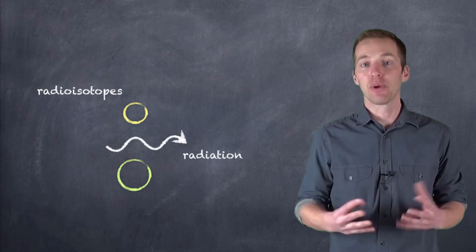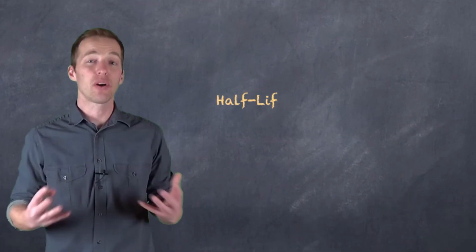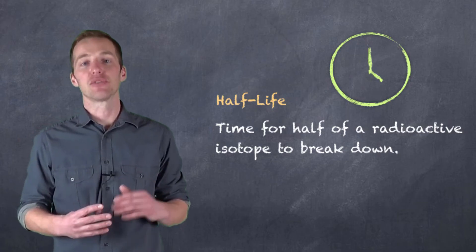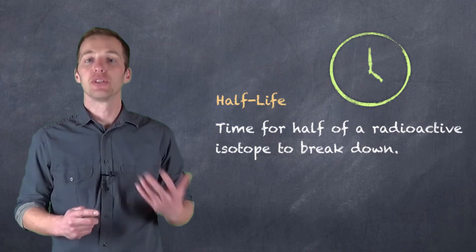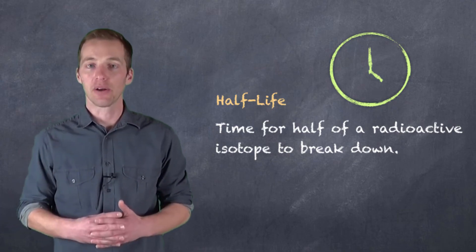Now, the time at which they break down, we refer to as a half-life. The half-life helps us determine how long these isotopes are going to stick around. Because the half-life is the amount of time that it takes for half of a radioactive isotope to break down. The longer the half-life, the longer it's going to stick around.